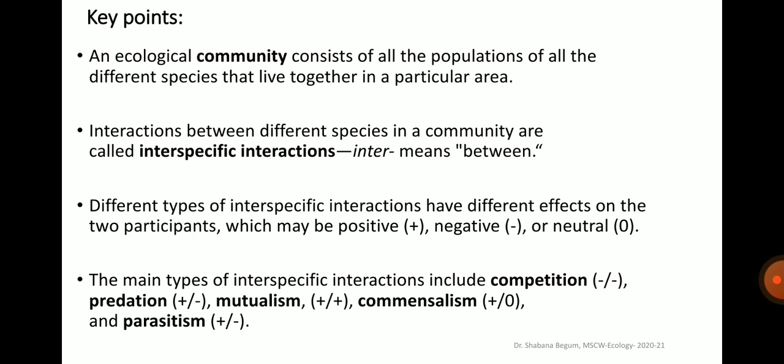The key points for this topic include: an ecological community consists of all the populations of all different species that live together in a particular area. Interactions between different species in a community are called interspecific interactions. Interactions may take place between members of two different species or the same species. Different types of interspecific interactions may be positive, negative or neutral, and include competition, predation, mutualism, commensalism and parasitism.